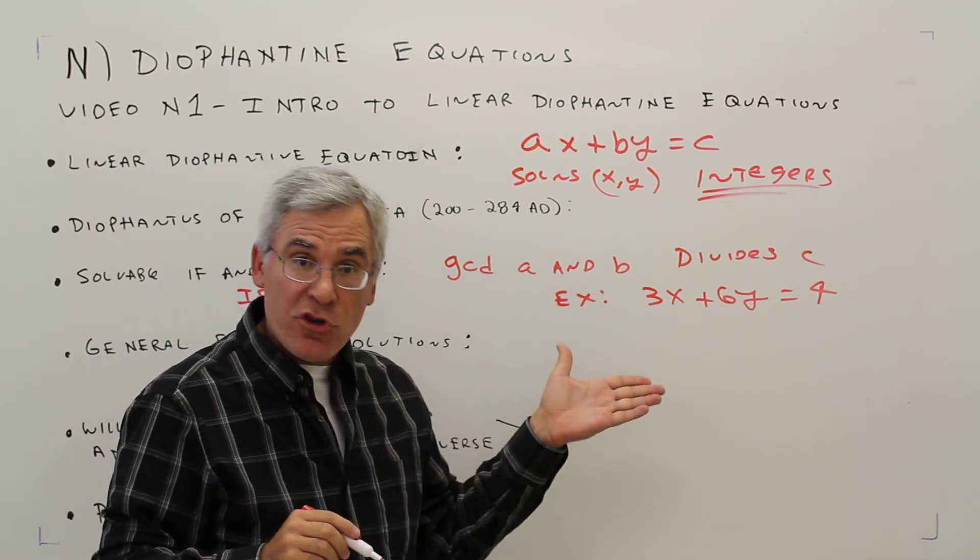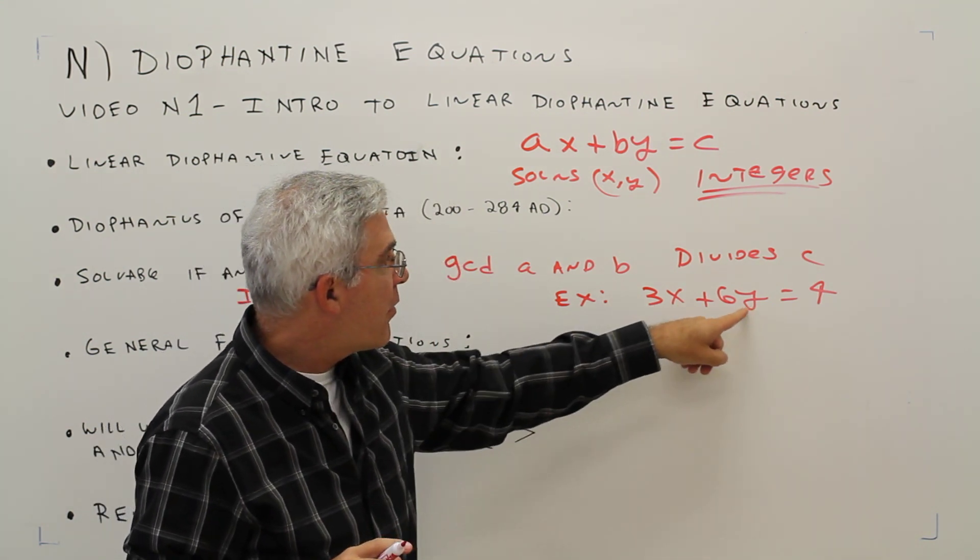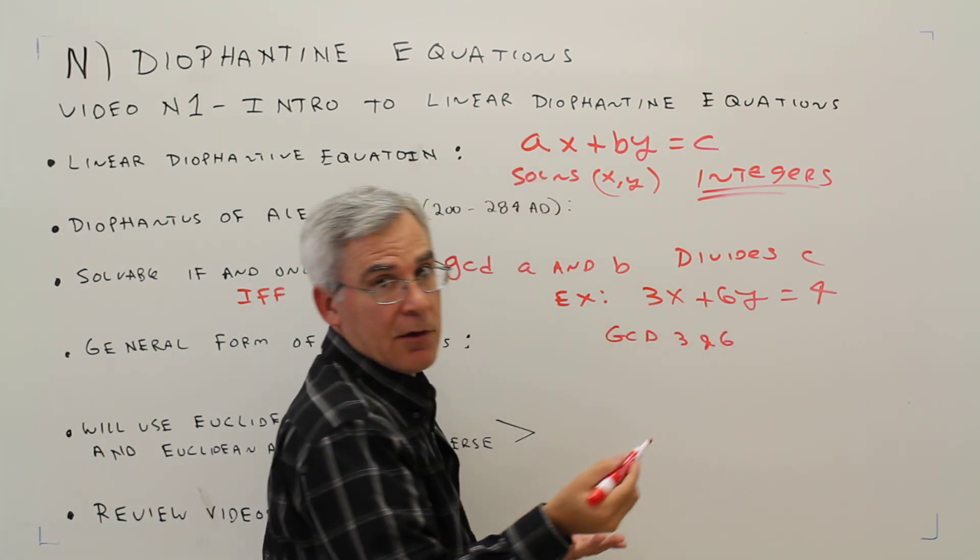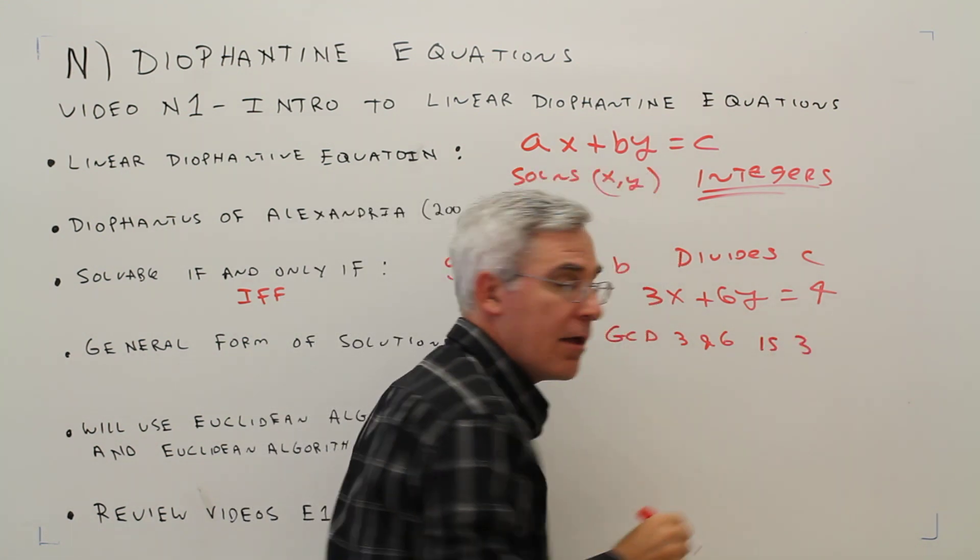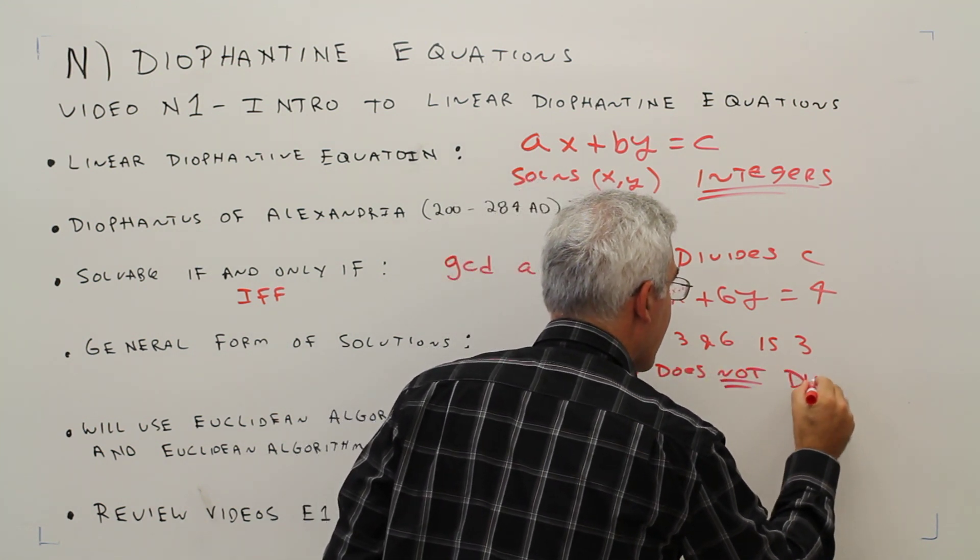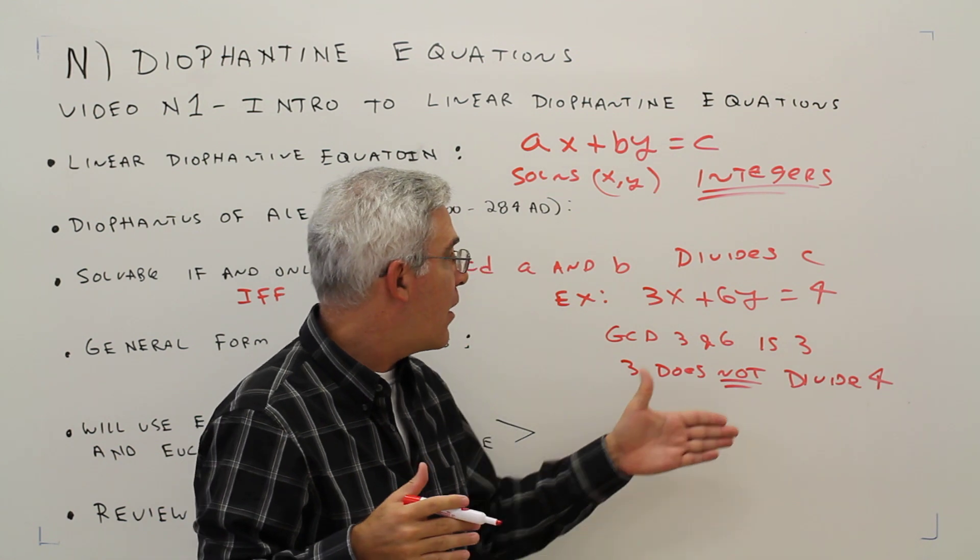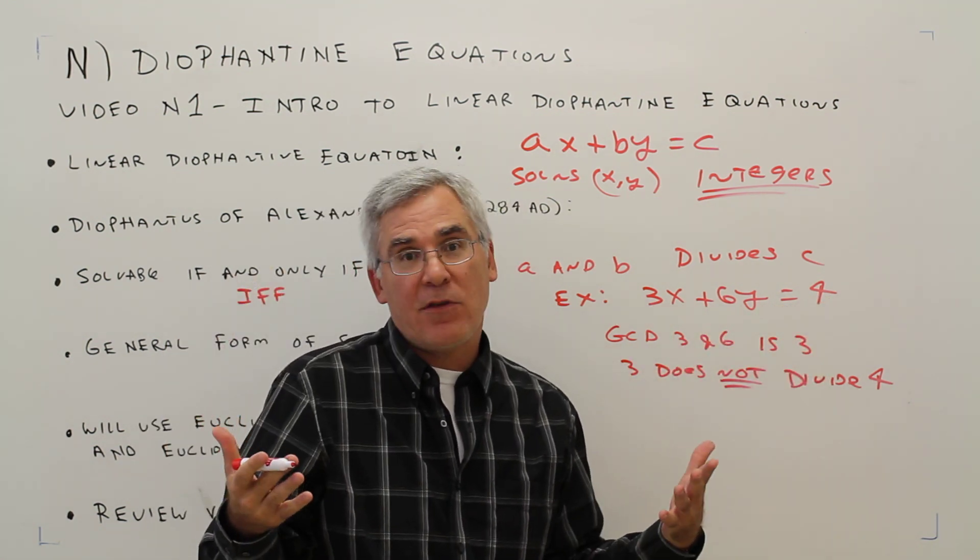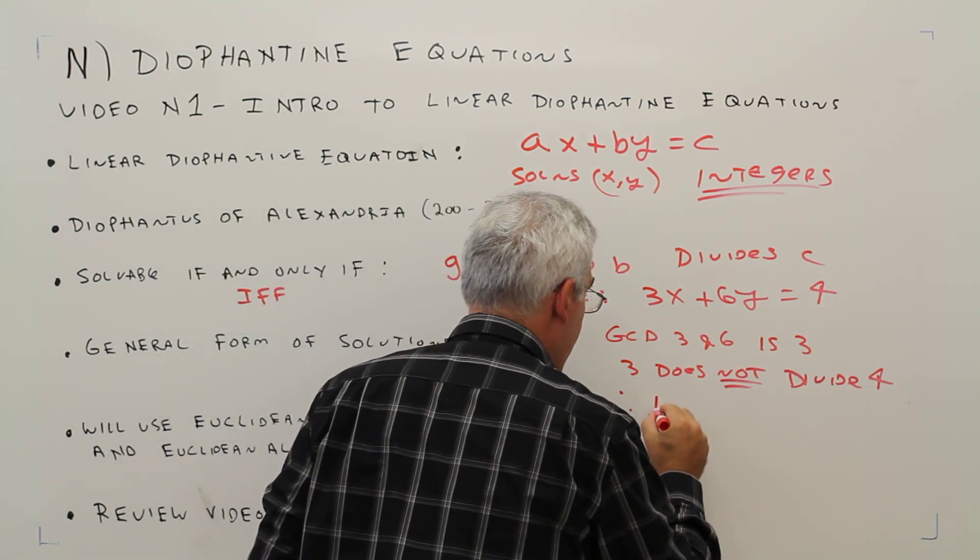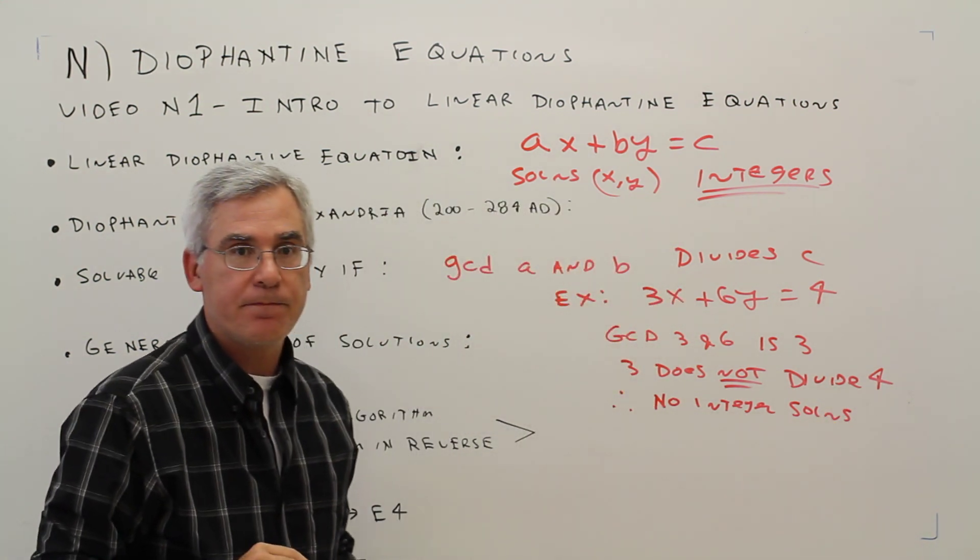And we want to find integer solutions. Of course it's got solutions, it's a line, but we want to see if it's got integer solutions. So we're going to take the greatest common divisor of 3 and 6, I could do that in my head, is 3. However, 3 does not divide 4. When we say does 3 divide 4, we mean is 4 a multiple of 3, basically. And the answer is no, therefore, there are no integer solutions.